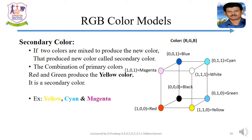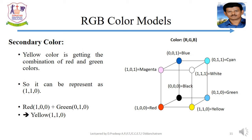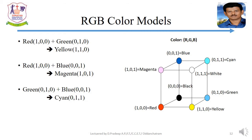When two primary colors are mixed to produce a new color, that new color is called a secondary color. Red (1, 0, 0) combined with green (0, 1, 0) produces yellow, represented as (1, 1, 0). Similarly, magenta is represented as (1, 0, 1) because it is the combination of red and blue. Cyan is represented as (0, 1, 1) because it is the combination of green and blue.